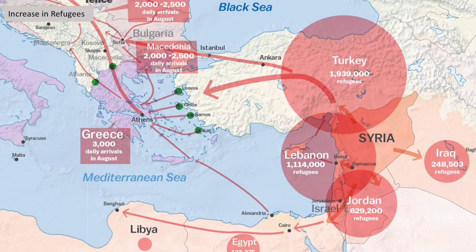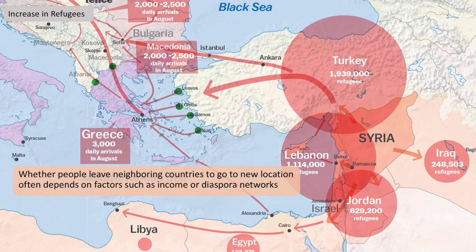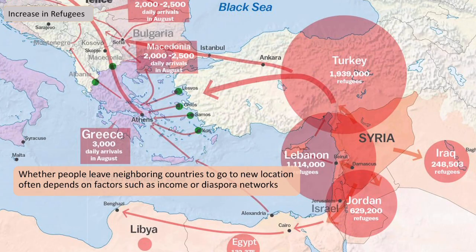The only way people might be able to move on is if they have some sort of income or established diaspora networks. From the Syria conflict, people are ending up in Turkey, Lebanon, and Jordan in large numbers, but some are making it into Europe and the global north. This depends on how much money those people have and whether they know people who have already done those routes, because it's very expensive and the risks aren't well known unless you have prior contacts.